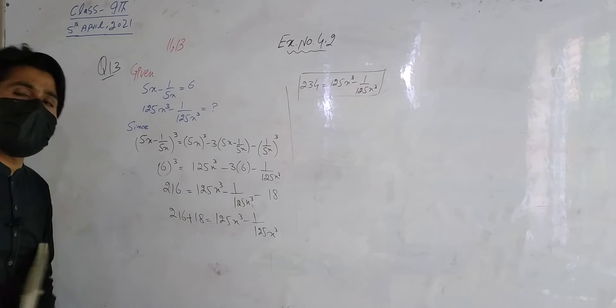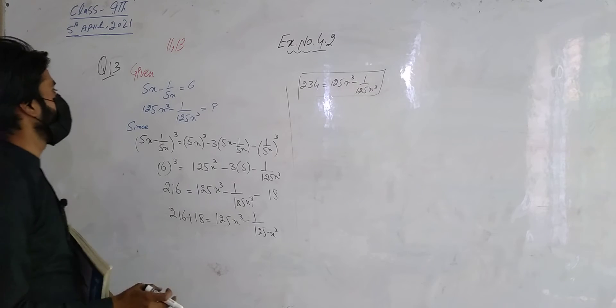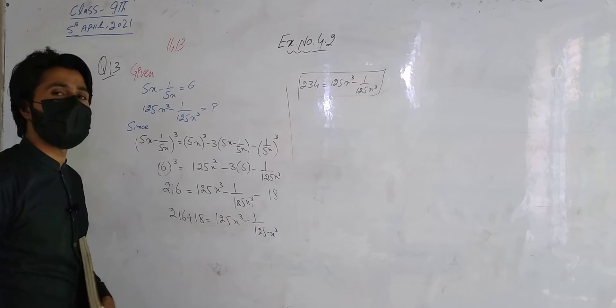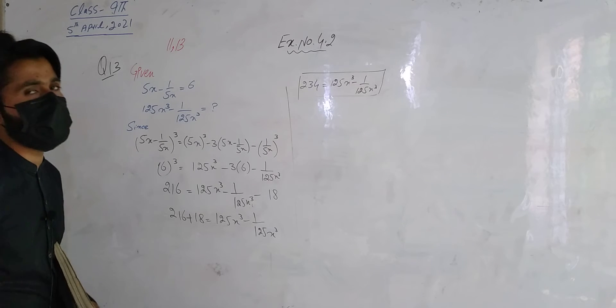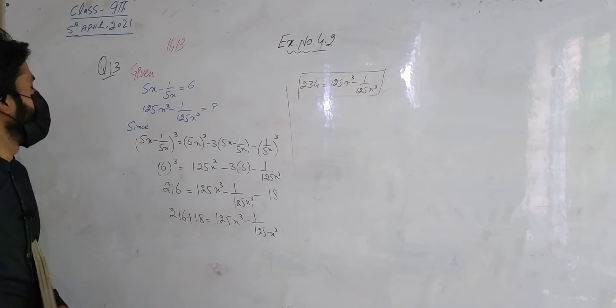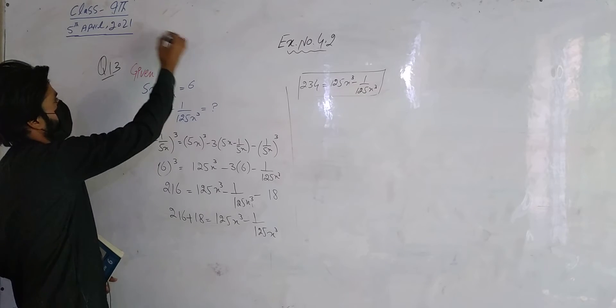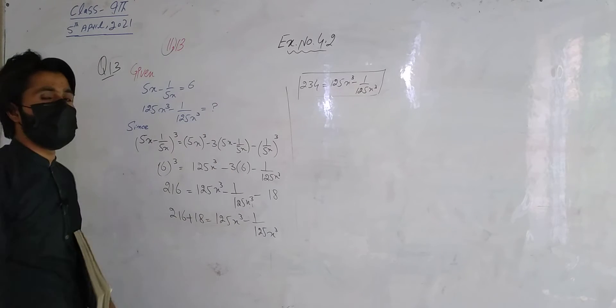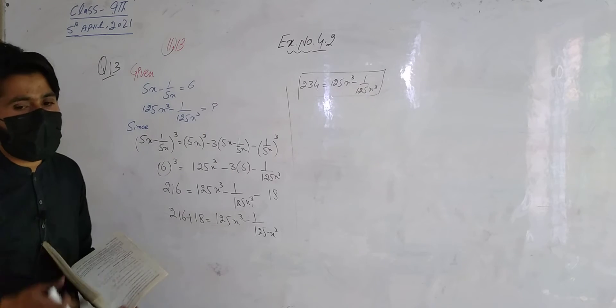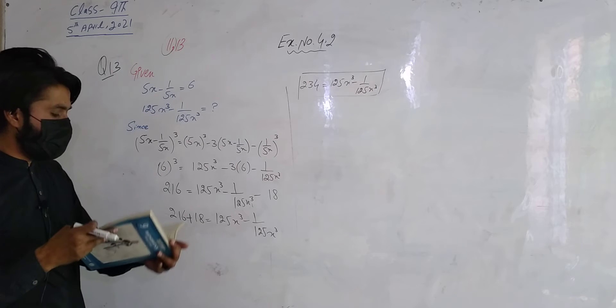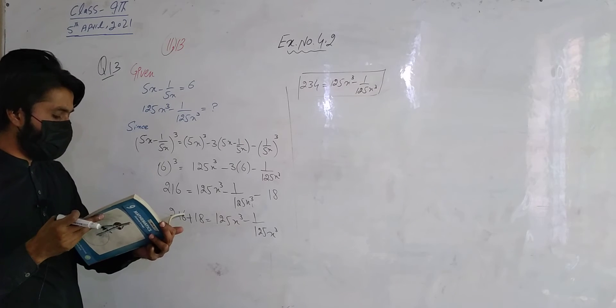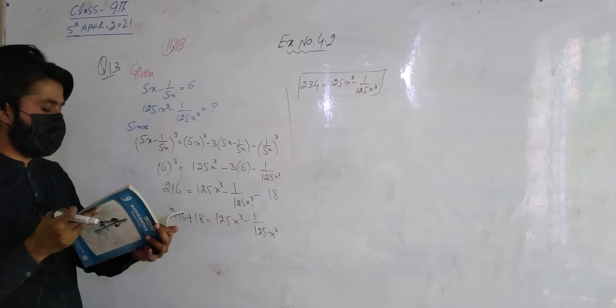The required answer is 1/25 x cube minus 1 over 1/25 x cube. You have a similar question, question number 11, which we will attempt to do. Now we move to question number 14.